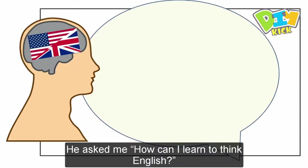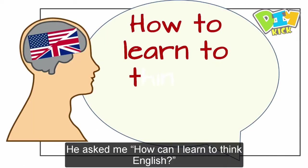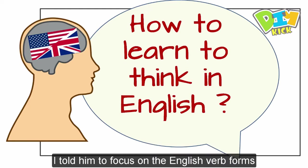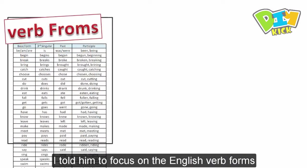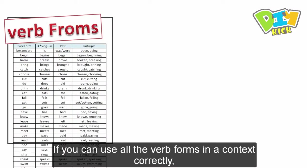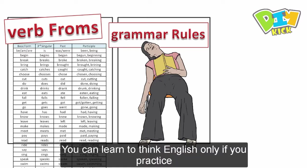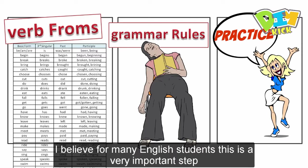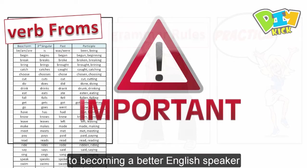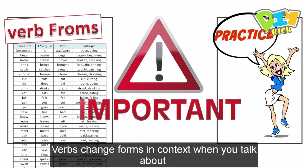He asked me, how can I learn to think English? I told him to focus on the English verb forms. If you can use all the verb forms in a context correctly, you can become a fluent speaker without reading the grammar rules much. You can learn to think English only if you practice. I believe for many English students this is a very important step to becoming a better English speaker.